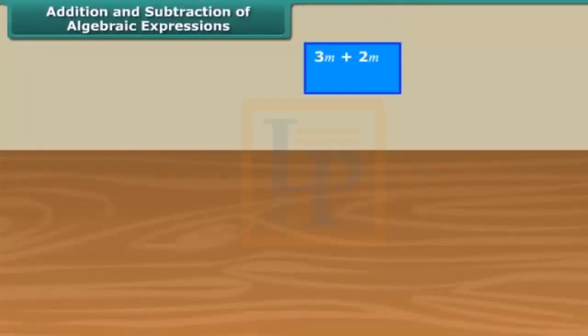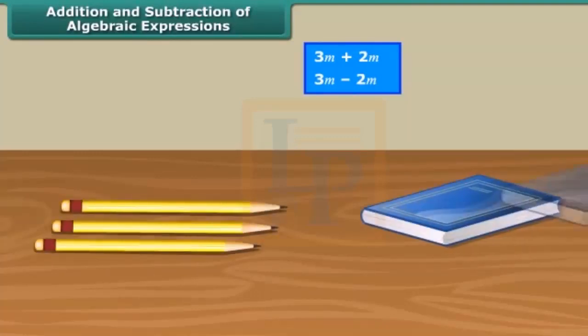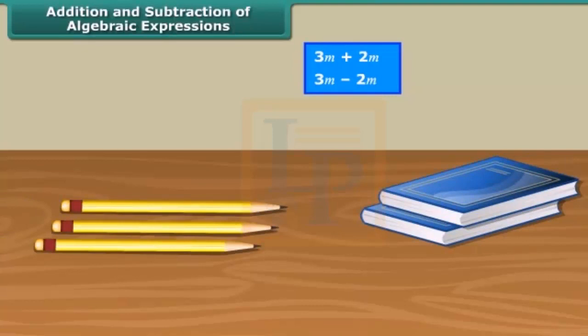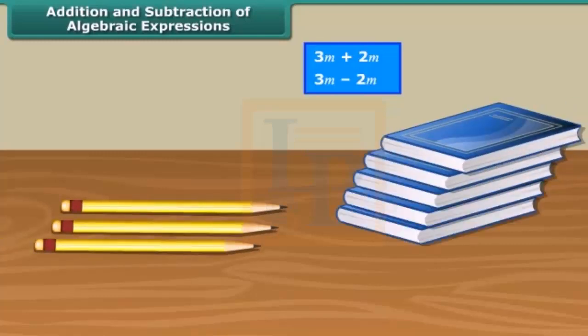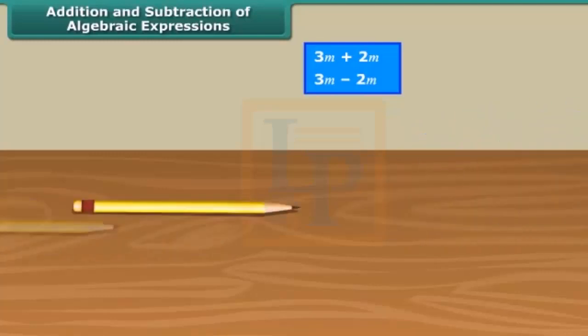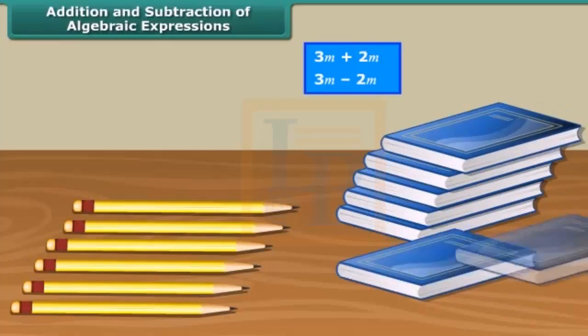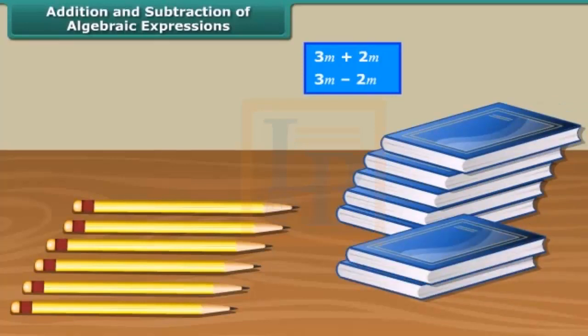We can only add or subtract like terms. But why is it so? Think of it like this. On a table, we have three pencils and two books. We cannot add the three pencils to the two books because they are not the same kind of objects. Now, if we get another three pencils and five books, altogether, we now have six pencils and seven books. Now again, we can't combine these objects since they are different.